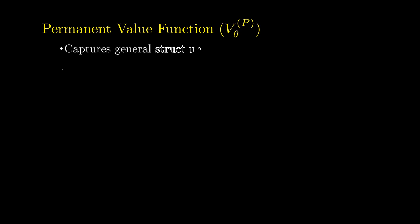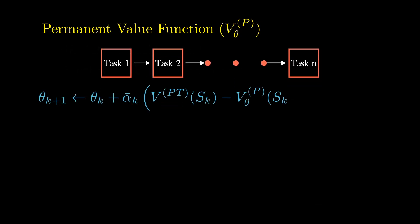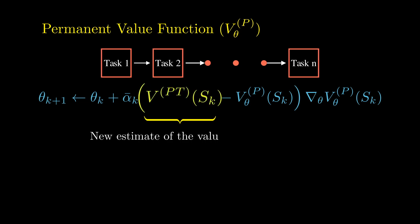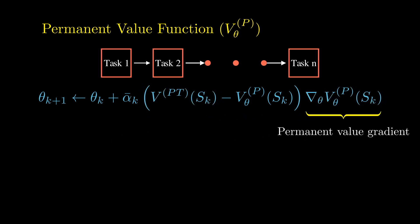Similar to the role of the neocortex in the brain, the permanent value function should capture general structure in the value functions from tasks the agent has seen in its lifetime, and provide good baseline predictions for any task it faces in the future. To achieve this, we update the permanent value function towards the new estimate of the overall value function whenever the task changes. If task boundaries are unobserved, we update it every k steps.